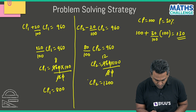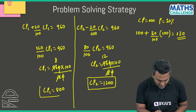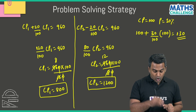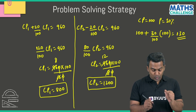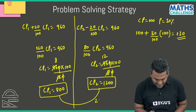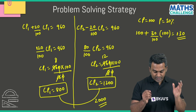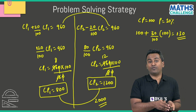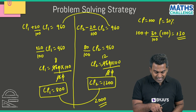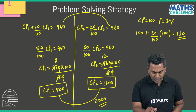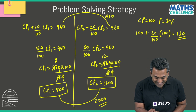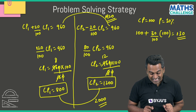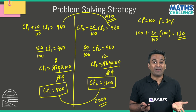Cancelling this out, CP2 = 1200. So the cost price of the phone is $800 and the cost price of the laptop is $1200, giving a total cost price of $2000. The total selling price is 960 + 960 = $1920.